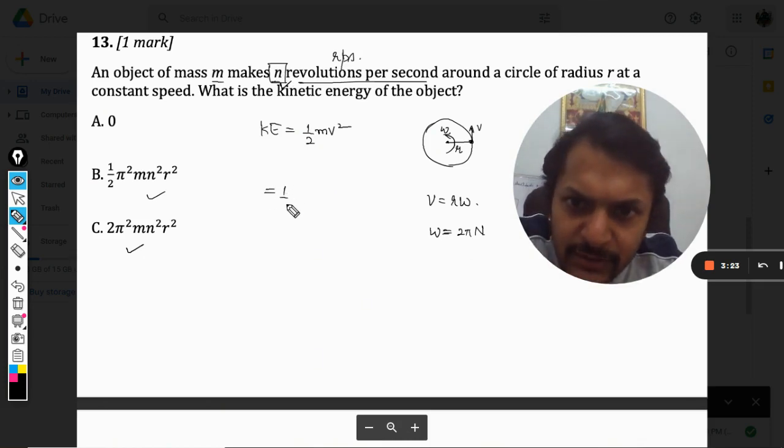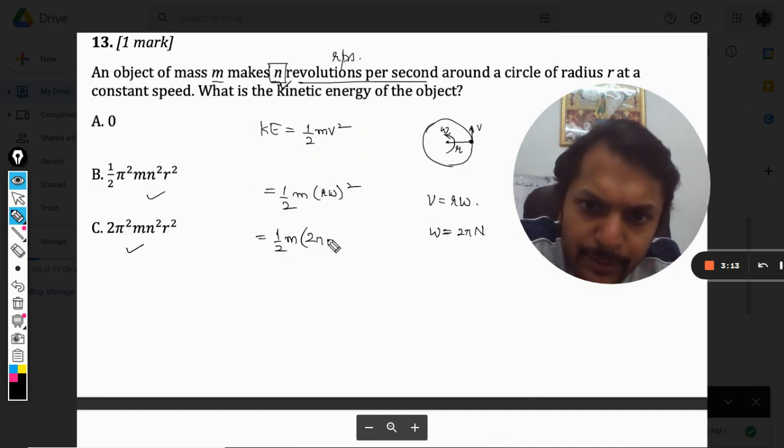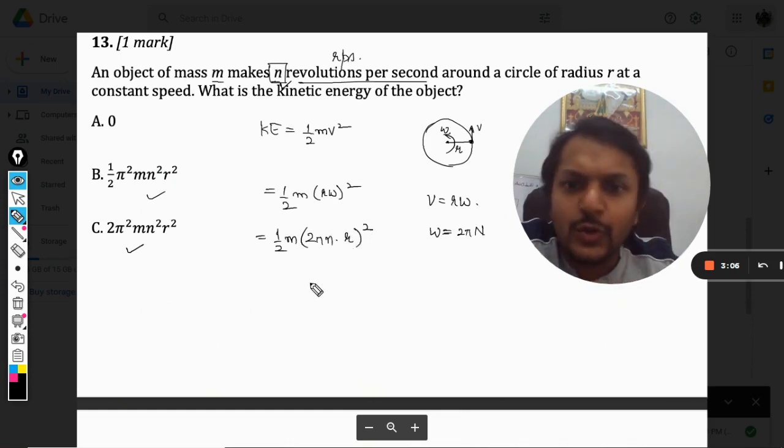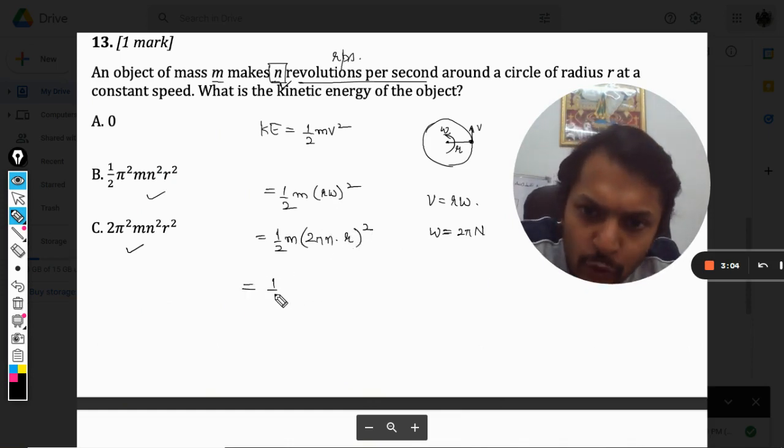From here we can find omega and we will substitute it here. So it will be half mv square. It will be half m and omega will be 2 pi n, because it is per second now, omega into radius r square. Now we will open this bracket, it will become 4 pi square n square r square. So this will become 2, so 2m pi square n square r square.